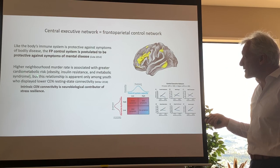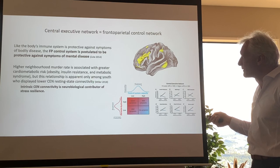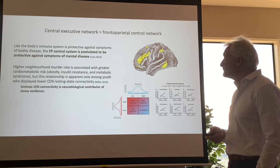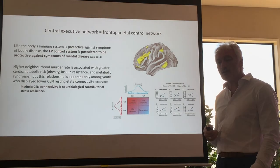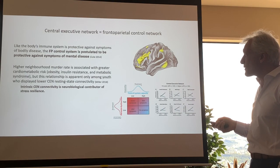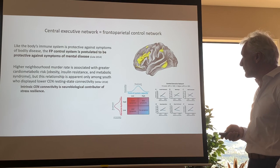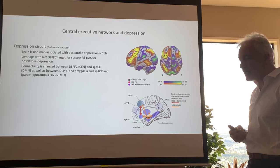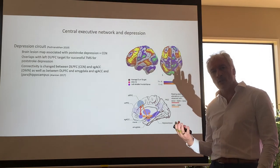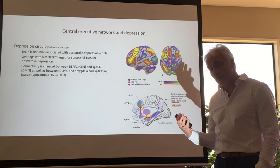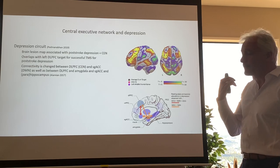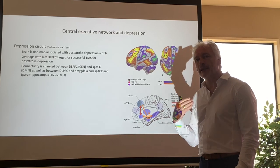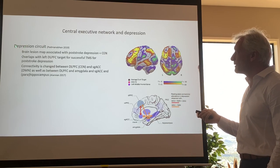This cardiometabolic risk from living in a high-murder-rate neighborhood is only apparent when young people have lower central executive network connectivity — meaning the frontal parietal control network cannot reduce uncertainty well enough, leading to secondary problems in autonomic nervous system control. Because the ultimate goal of the brain is to reduce inherent uncertainty, if that doesn't function, the brain may prefer not to engage with the environment anymore, which might ultimately lead to depression.